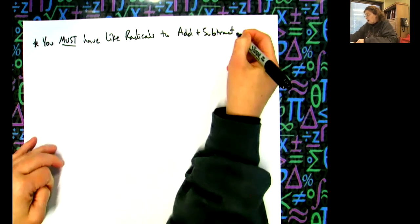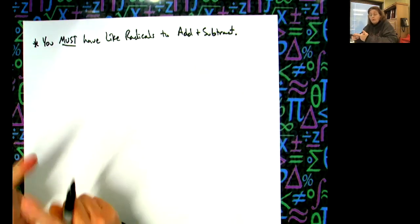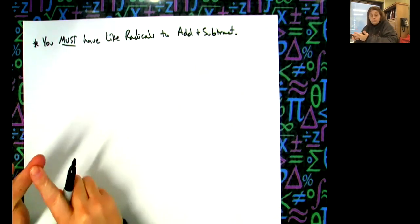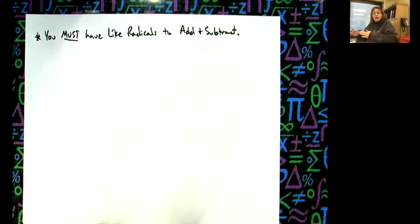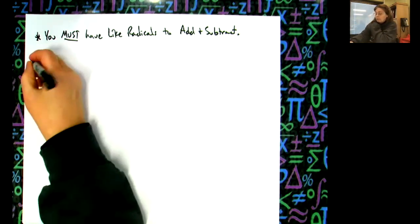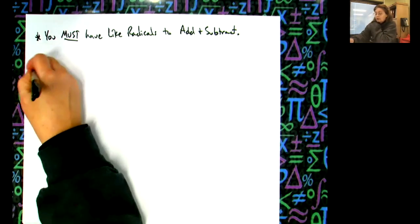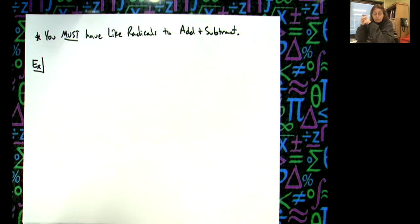This would work with square roots, cube roots, fourth roots - it doesn't make any difference. If I'm going to add and subtract radicals, I have to have the same radical. Most of the examples here are going to be square roots, but the exact same principle applies to cube roots, fourth roots, etc.